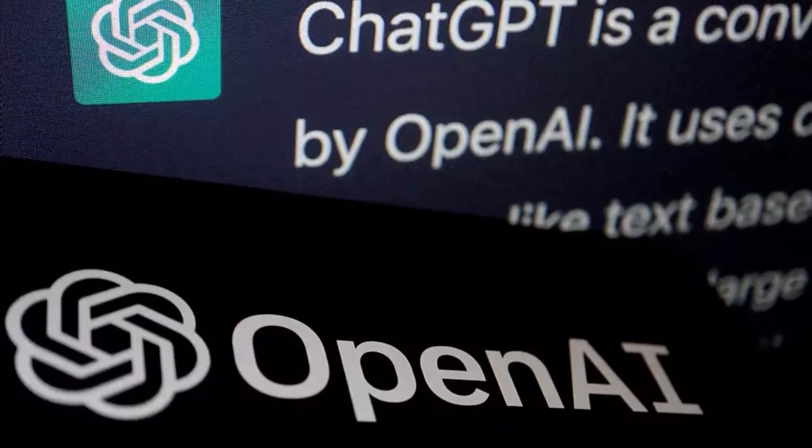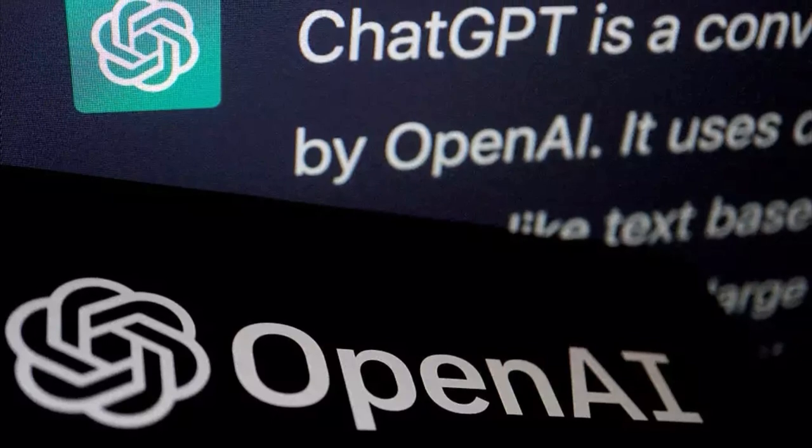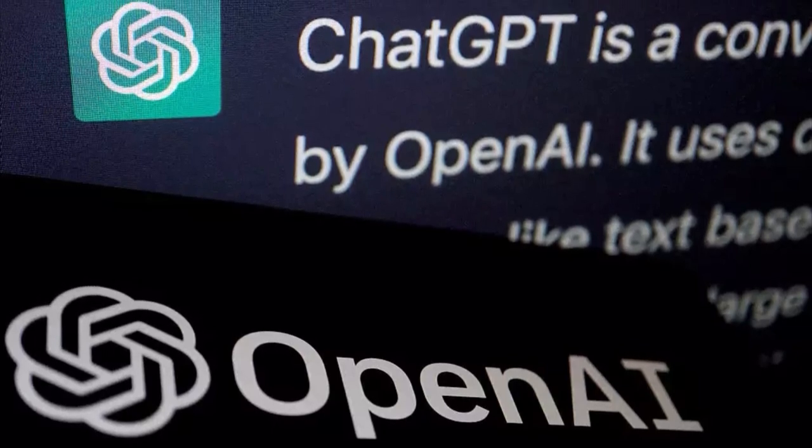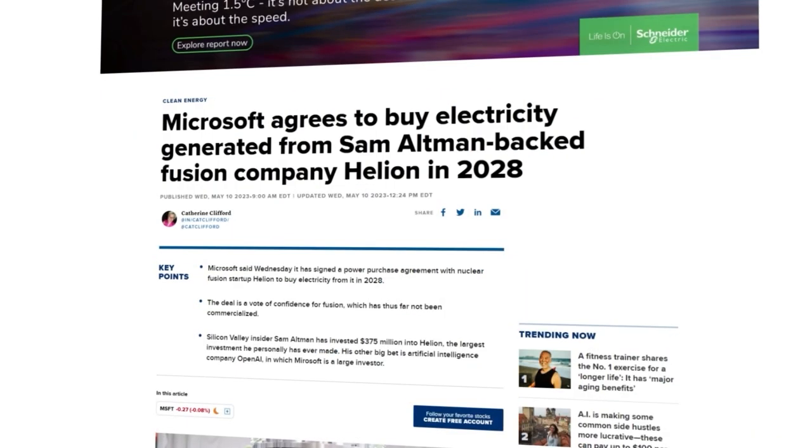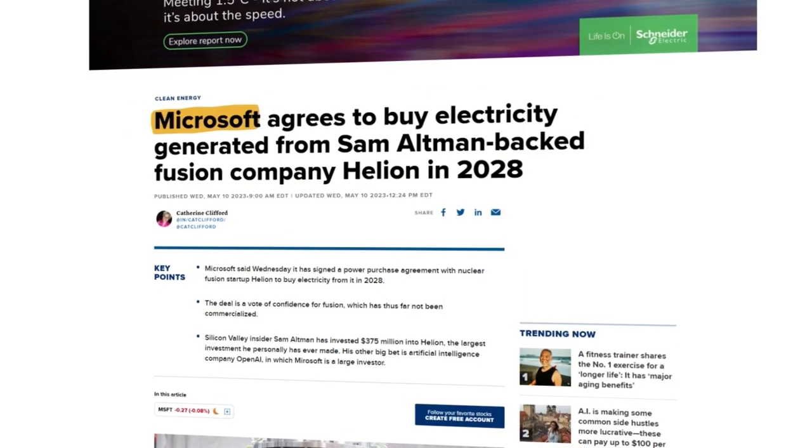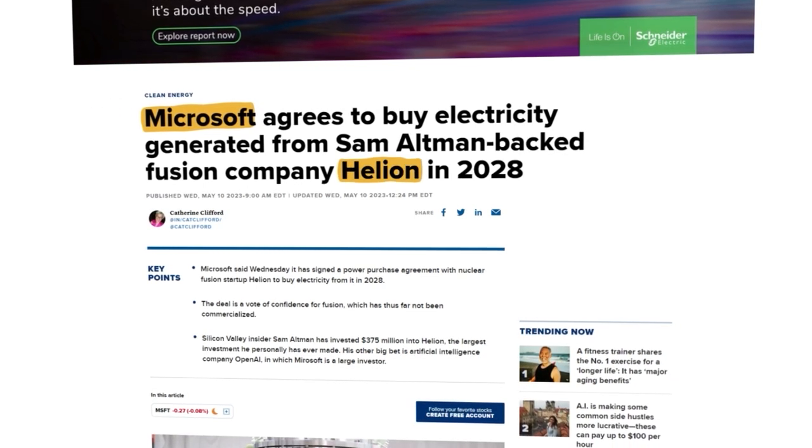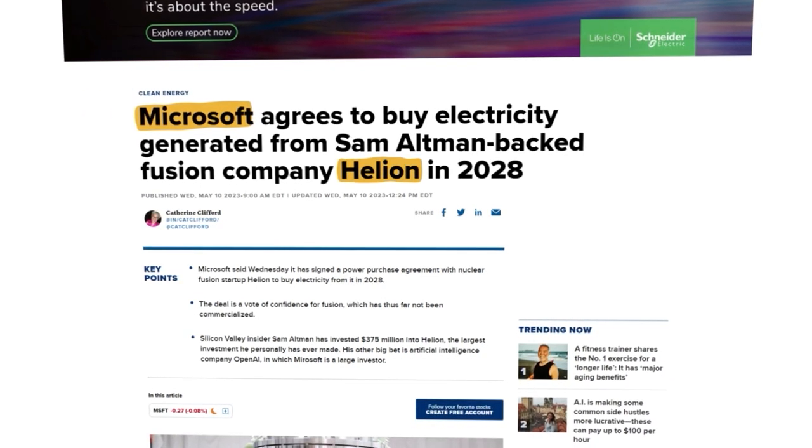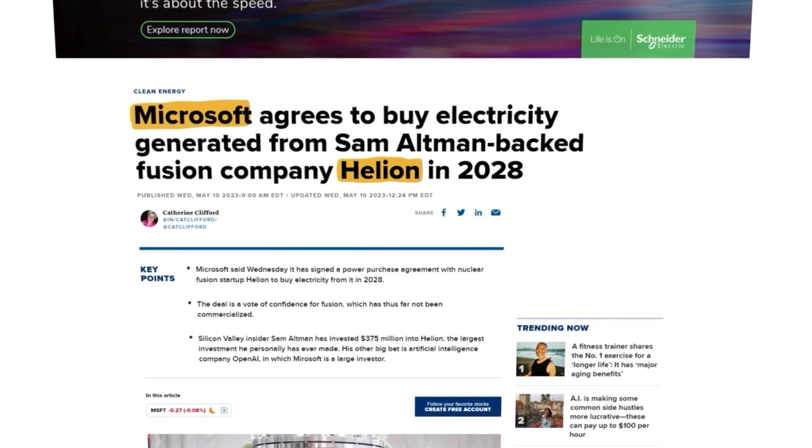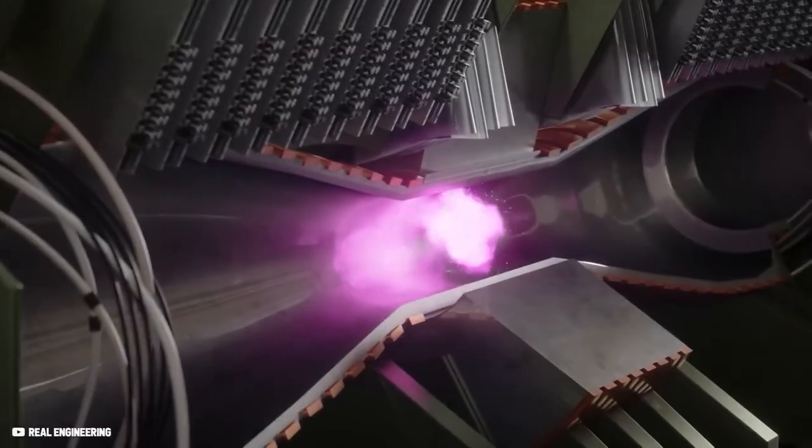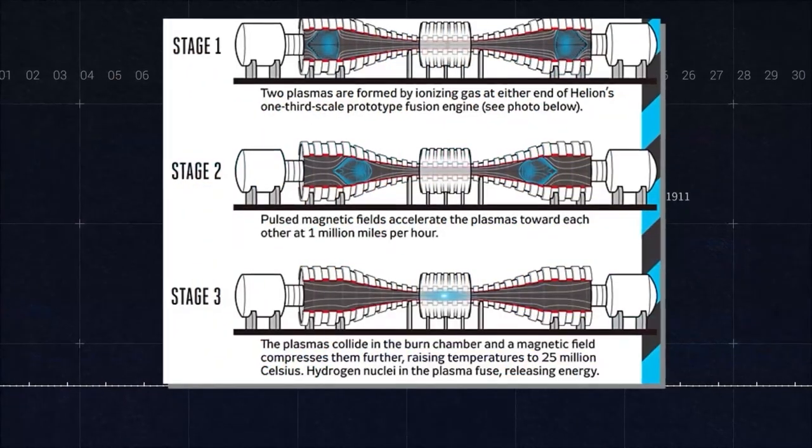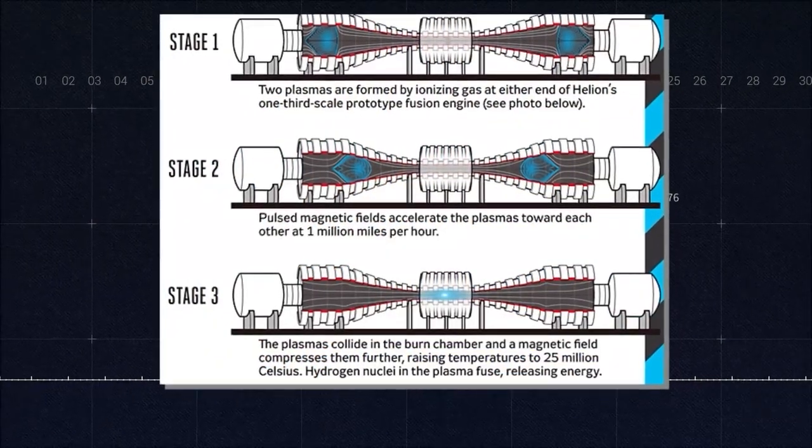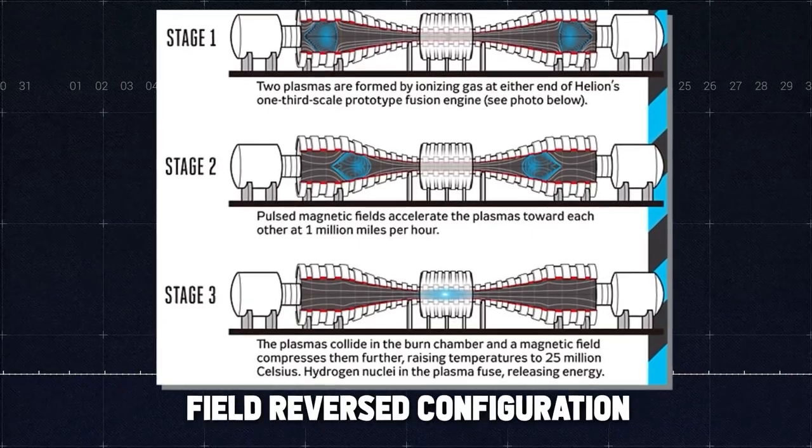His other big bet is artificial intelligence company OpenAI, in which Microsoft invested a whopping 13 billion dollars. And now Microsoft has signed a power purchase agreement with the nuclear fusion startup Helion, the first time in history a fusion company has inked a deal to sell electricity. But Helion is not building the Tokamak reactor. The startup has an entirely different approach by building the so-called field reverse configuration. And this is how it works.